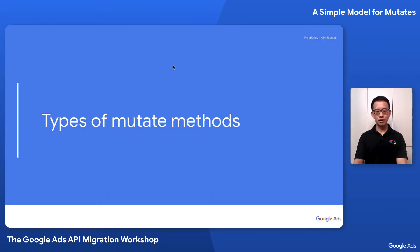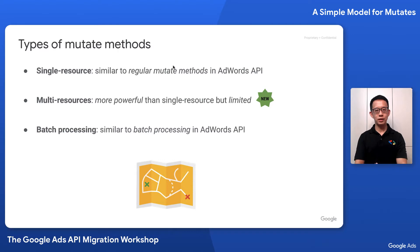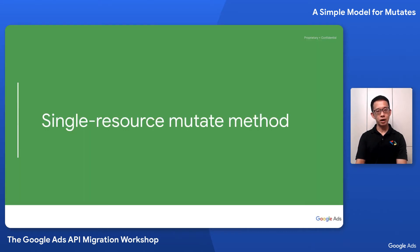In the Google Ads API, there are three types of mutate methods: single-resource, multi-resource, and batch processing. Single-resource is similar to regular mutate methods in the AdWords API. Multi-resource mutate method is more powerful in that it accepts multiple types of resources in one request, and this is new in the Google Ads API. Batch processing is also similar to that of the AdWords API, but uses different mechanisms.